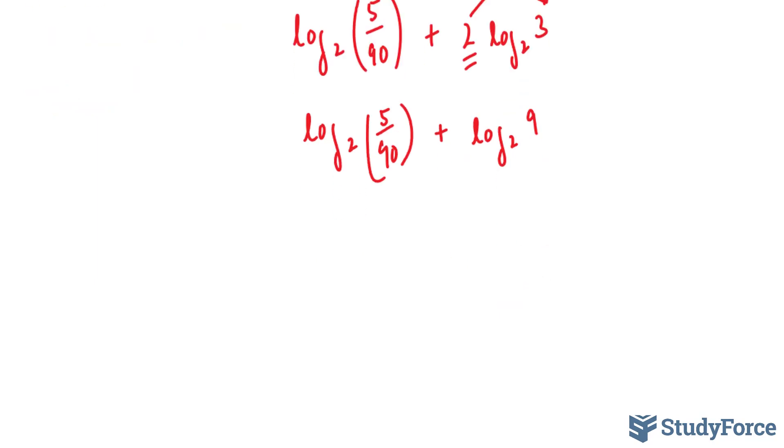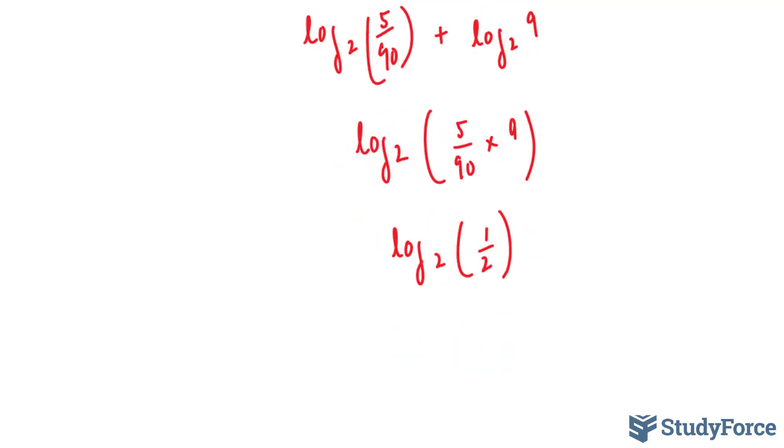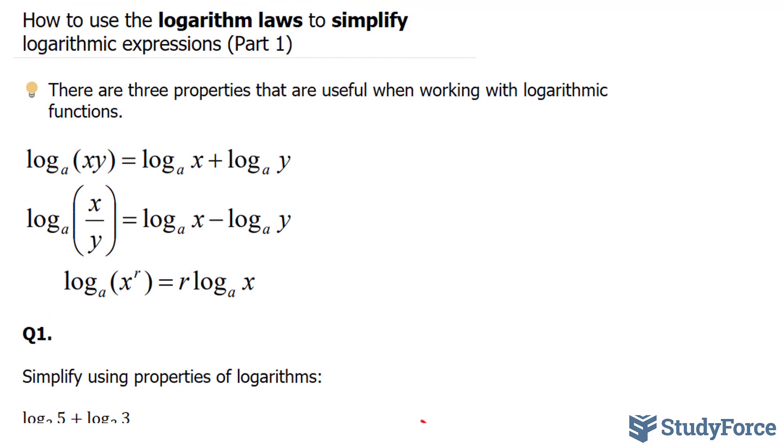So we end up with log base 2, 5 over 90 times 9. 5 times 9 is 45. 45 divided by 90 is half. So we have log base 2 of 1 over 2. And that's it. That is how to combine and simplify expressions containing logs.